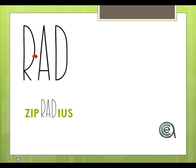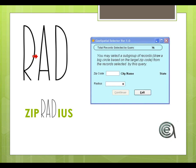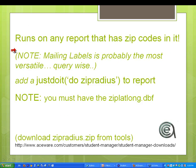Rad — Zip Radius. This is the new tool called Zip Radius that you can launch again just on a report. Any report that has a zip code — you add a just-do-it note on the mapping as a just-after. You must have this table, zip-lat-long, which is in the download section of Tools that we were at a minute ago.